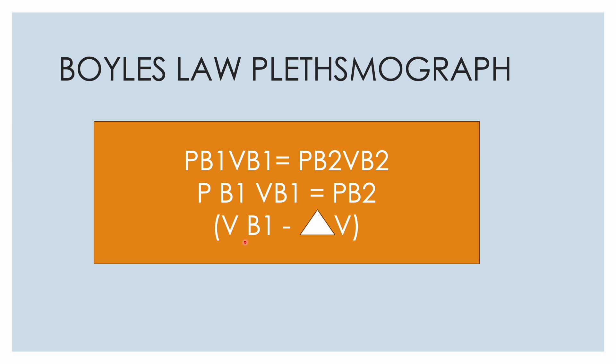But the new volume is actually Vb1 which was the initial volume minus a little change, because when your patient is inspiring against the closed shutter, the closed glottis, there is still some change in volume in the lungs. So the volume in lungs goes higher, it increases, so the plethysmograph has to lose some of its volume.